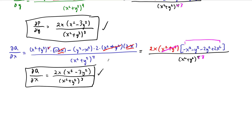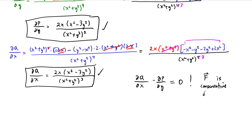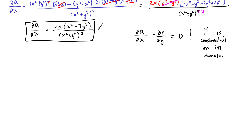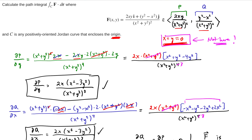This tells us two things. First, F is conservative on its domain. Second, if we try to apply Green's theorem, the integrand in the double integral portion is exactly this expression, which equals zero. However, we need to be careful because the origin is not in the domain, so Green's theorem does not apply to the entire plane.